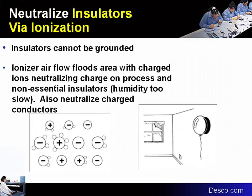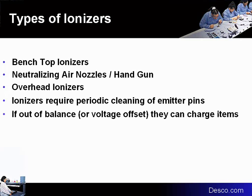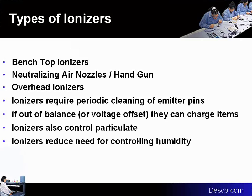Sometimes at a workstation we may have insulators that cannot be eliminated or replaced — these are called process essential insulators. When that is the case, we use ionization to neutralize the charges. The bench top ionizer is the most popular, placed on the bench pointed at the area needing neutralization. For air blow-off guns used on ESD sensitive devices, you would want ionized air, as moving air causes friction and a static charge. Overhead ionizers are used in larger bench areas. These all have auto balance systems that monitor themselves and alarm, but they all require maintenance in cleaning emitter points and monitoring controls.